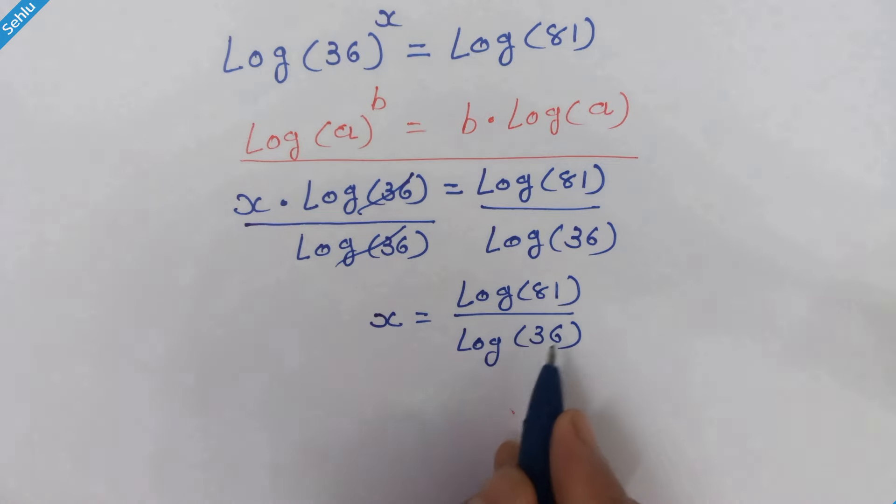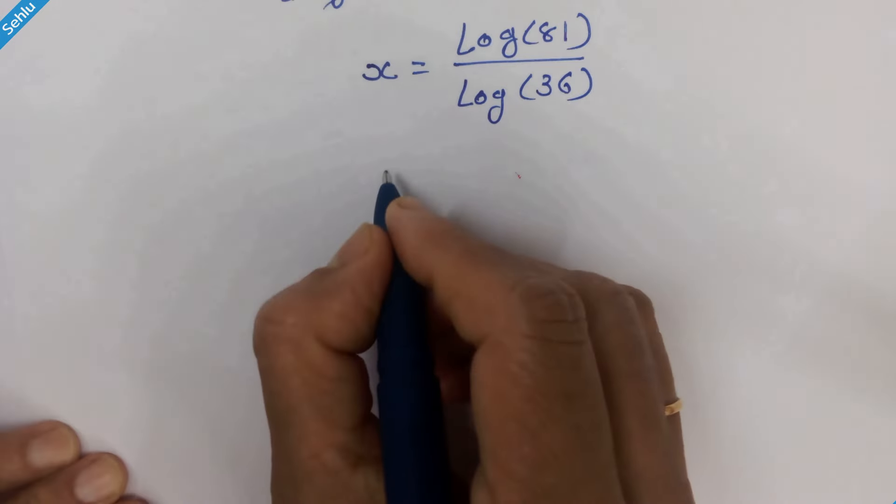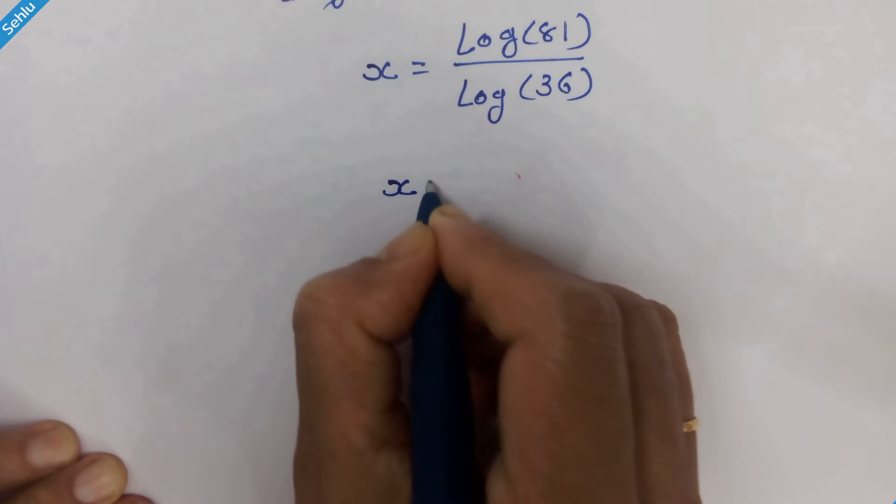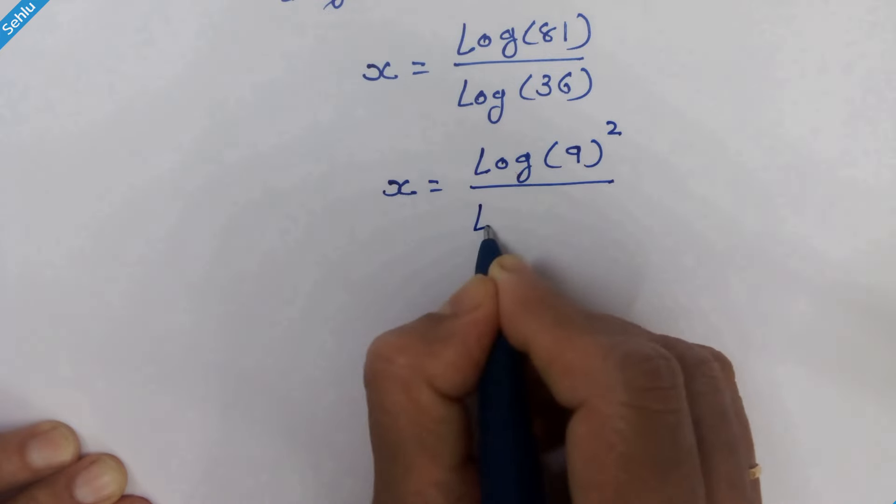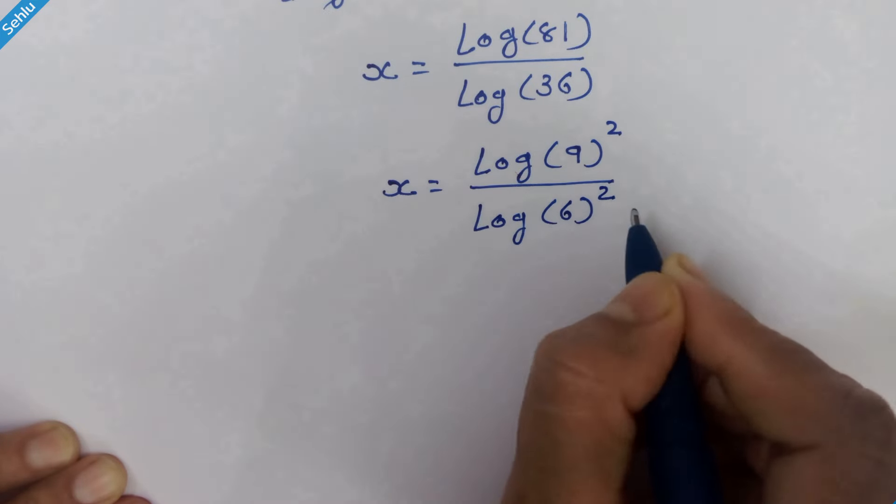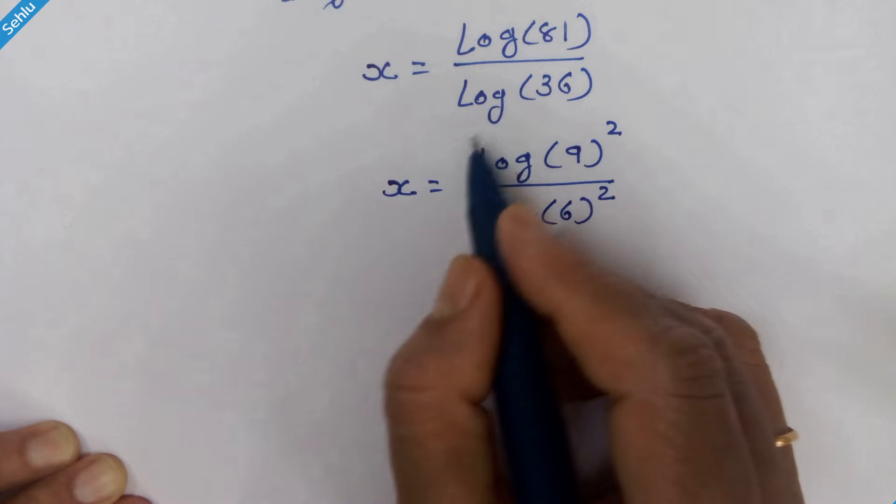81 is 9 squared and 36 is 6 squared. As per the rule, these two can be factored out.